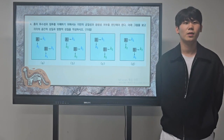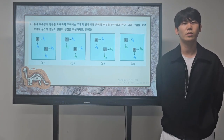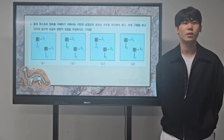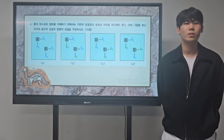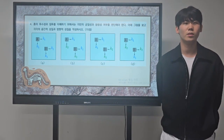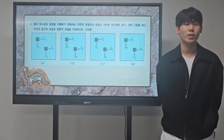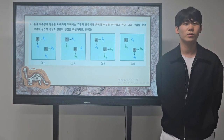First, in case A, the horizontal and vertical equivalent permeability coefficients of soil particles A and B are the same as K1. And the horizontal and vertical equivalent permeability coefficient of each of the A and B soil particles are also the same as K1. So in case A, the soil particles are homogeneous and isotropic.